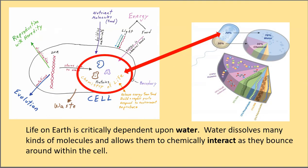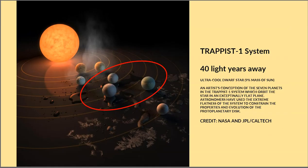Now, life on Earth is critically dependent upon water. Why is that? Because water dissolves many kinds of molecules and allows them to chemically interact as they bounce around within the cell. So this chemistry of life is happening in water. So this is why scientists are really interested in finding other planets that might have water on the surface. And generally, a planet has to be a certain distance from its star. So it's in the habitable zone so that water can exist as a liquid on the surface. These are the really interesting planets for scientists who are looking for other worlds that might have life.